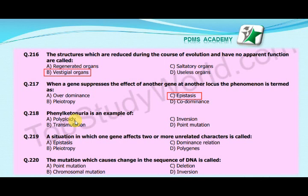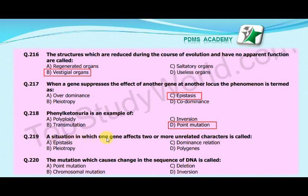Our next MCQ is: Phenylketonuria is an example of — A. Polyploidy, B. Transmutation, C. Invasion, D. Point mutation. The correct answer is D. Point mutation.